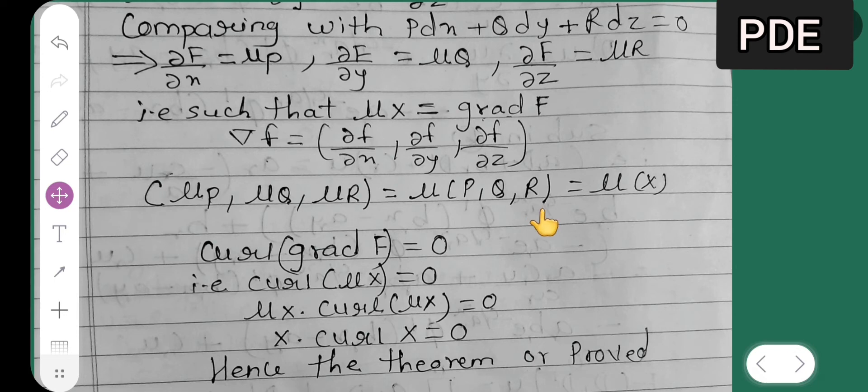P, Q, and R, which is equal to μ of X. What is this P, Q, R? It is nothing but X. So now curl of grad of f is equal to 0. Curl, that is curl of, what is grad of f? Nothing but μX. So in place of grad f, write μ of X is equal to 0.